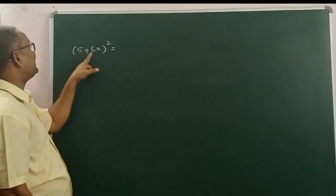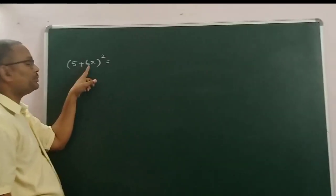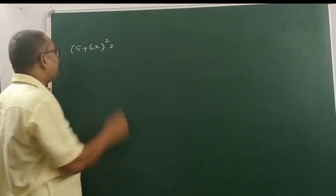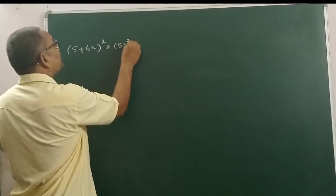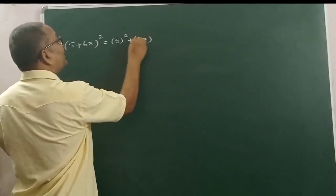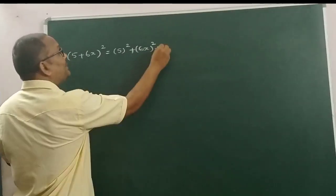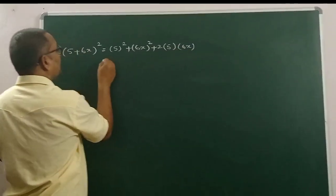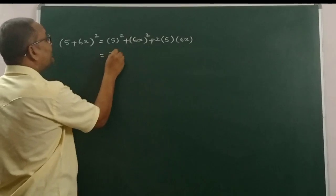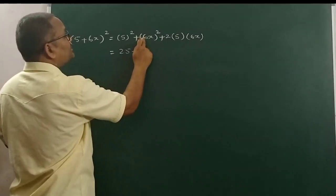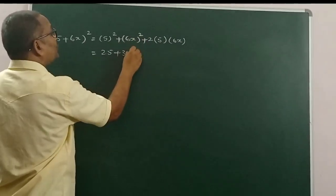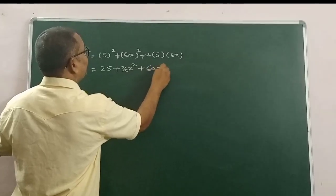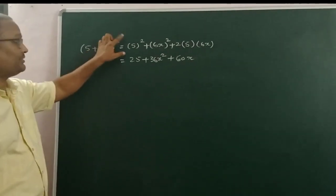Next example: 5 plus 6X whole square. This is in the form of A plus B whole square. Here, A is equal to 5 and B is equal to 6X. So A plus B whole square equals A square plus B square plus 2AB, that is 5 whole square plus 6X whole square plus 2 into 5 into 6X. That equals 25 plus 36X square plus 60X. This is the expansion of 5 plus 6X whole square.